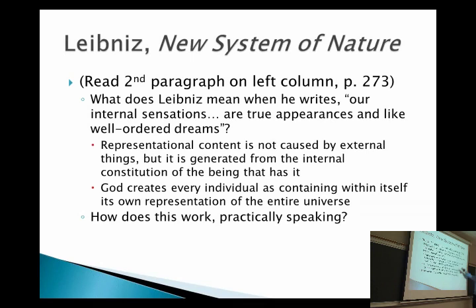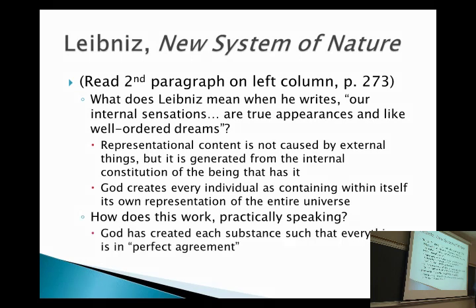If nothing interacts with one another, if everything is generated just from within one's self, how does this work practically speaking? God created each and every substance such that everything is in perfect agreement with one another. It's sort of like if you had a bunch of wind-up toys that move and dance around — if you could set those toys up such that they all look like they participate in some team sport, they don't actually participate together. It's just from their own internal workings that it looks like they have some cooperative thing going on.